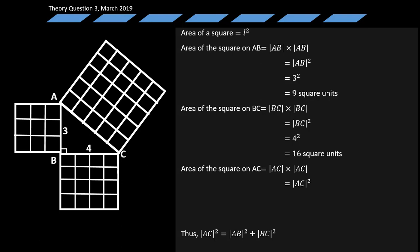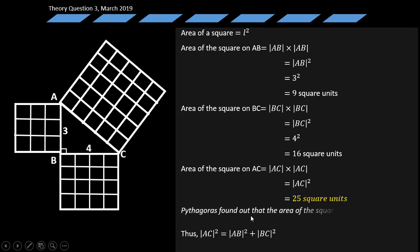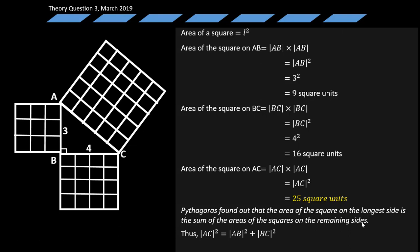That is the Pythagorean theorem. Pythagoras found that the area of the square on the longest side equals the sum of the areas of the squares drawn on the remaining sides. This is an important theorem to keep in memory.